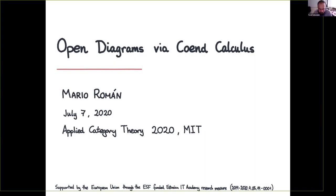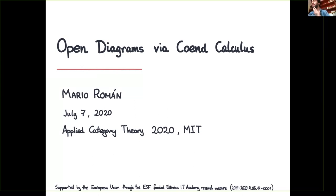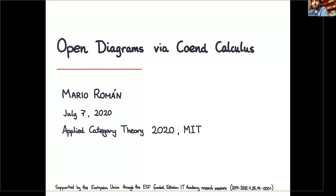This talk is going to be about how to reason about some constructions that appear in applied category theory, both using co-end calculus and string diagrams.